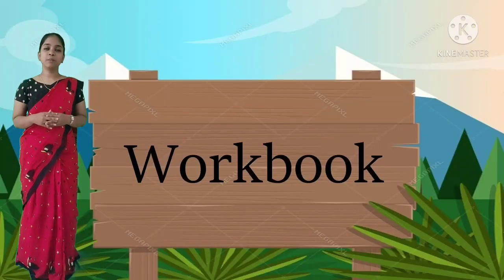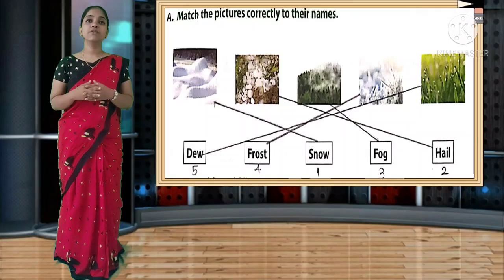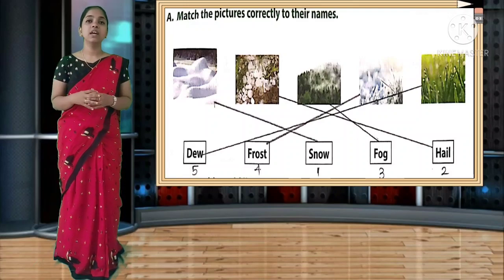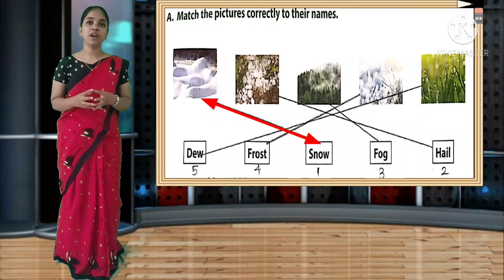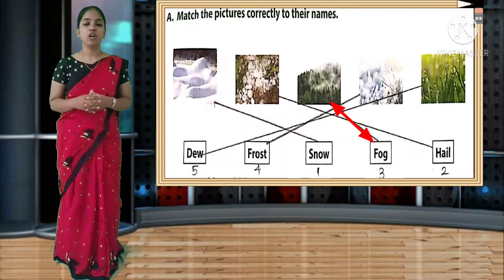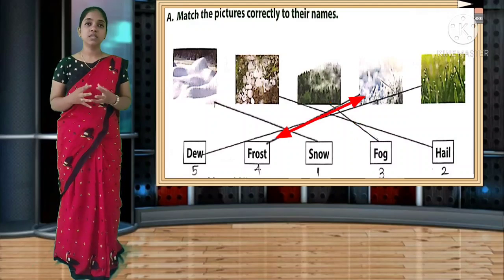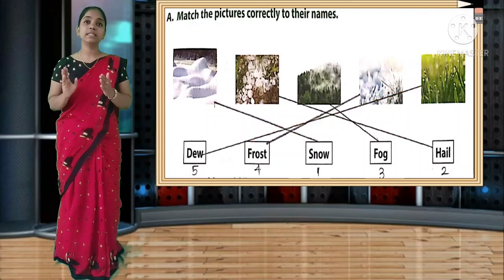From workbook lesson 12 - Air, Water and Weather. First question: match the pictures correctly to the name. First picture - snow. Second - hail. Third - fog. Fourth - frost. Fifth - dew. You have to match all the pictures to the correct names. Next: unscramble and fill the correct answer.